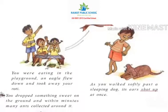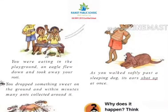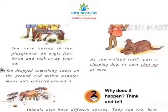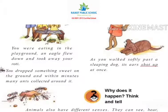First: you were eating in the playground and an eagle flew down and took away your roti. This has happened — an eagle or a crow snatched food right from your hand. Second incident: as you walked softly past a sleeping dog, its ears shot up at once. You have experienced this — even when the dog is sleeping, if you pass by quietly, its ears shoot up. Third incident: you dropped something sweet on the ground and within a few minutes many ants collected around it. Because animals also have different senses — they can see, hear, taste, smell, and feel.